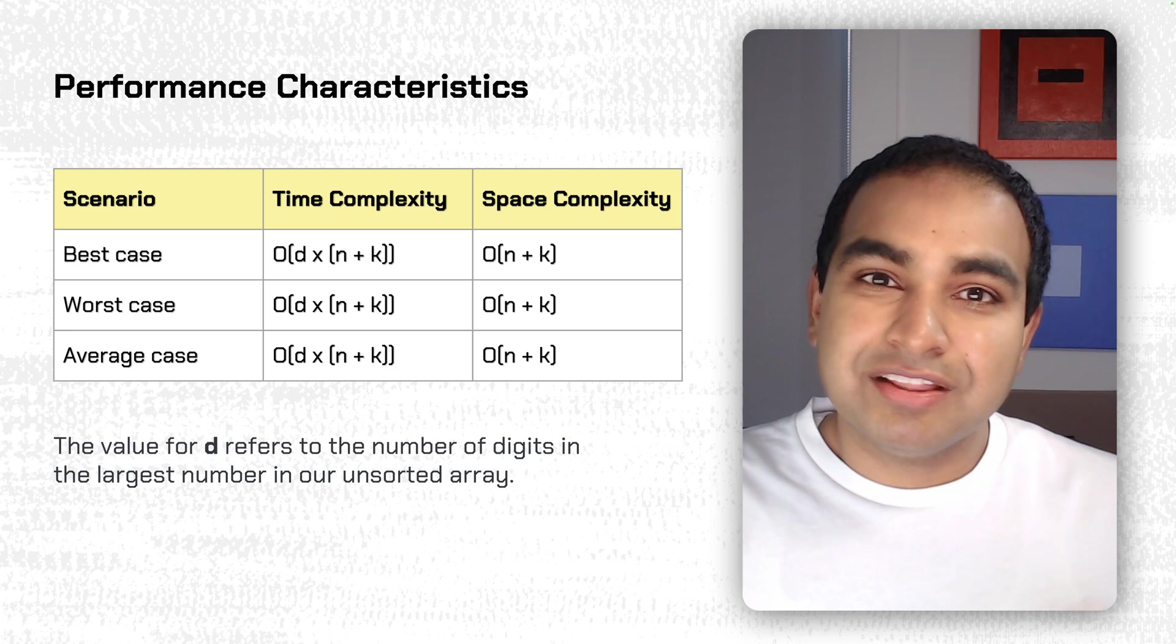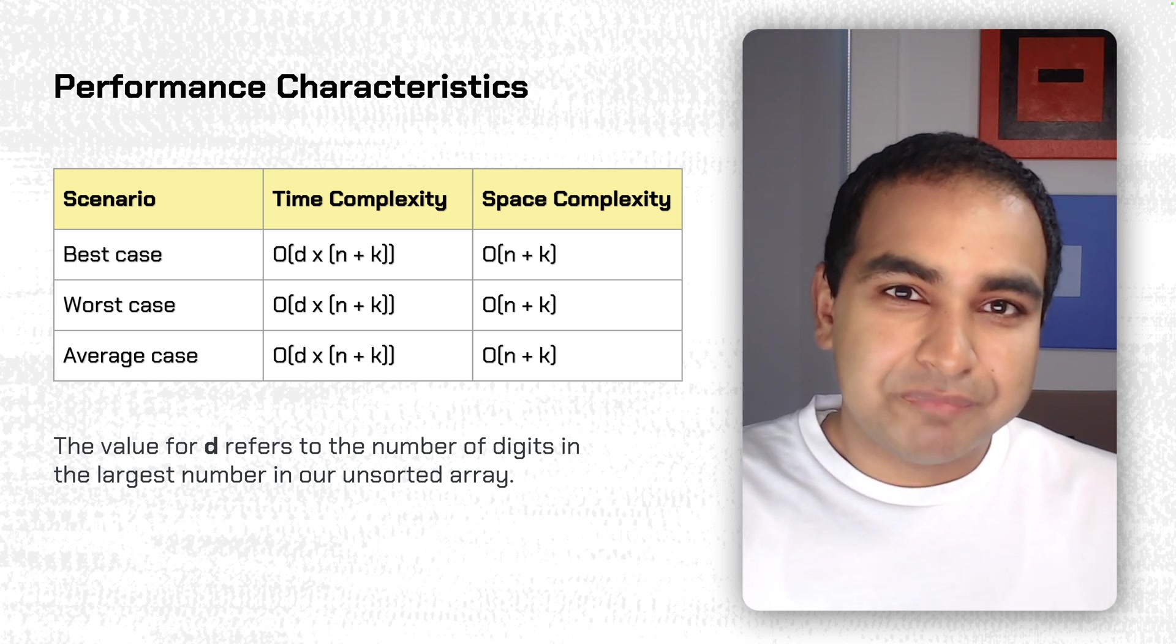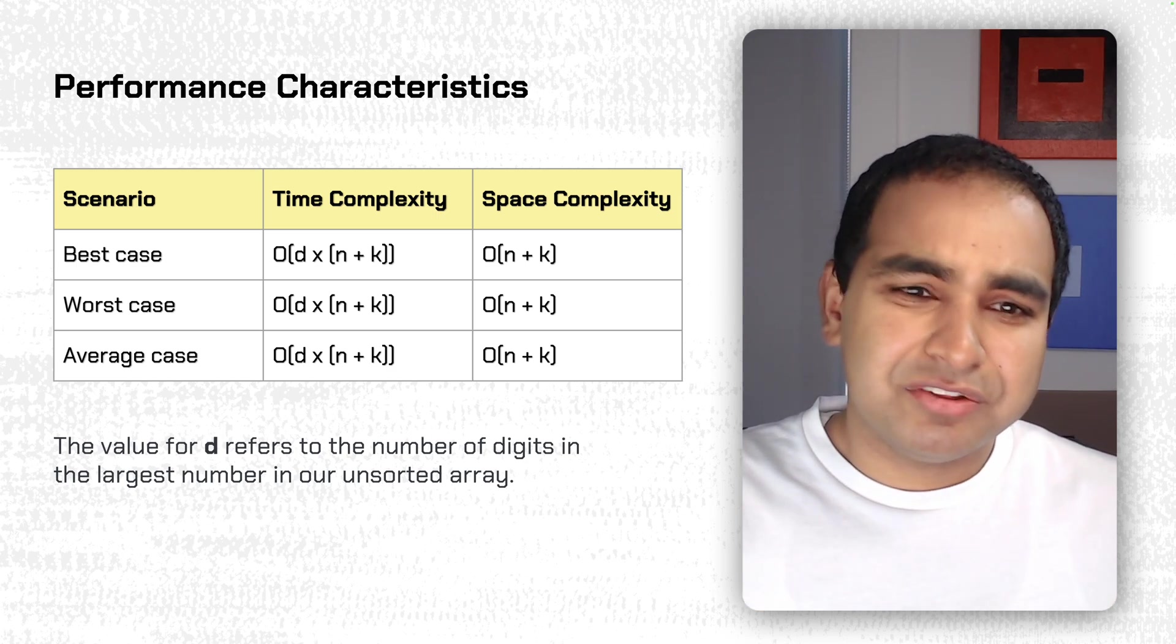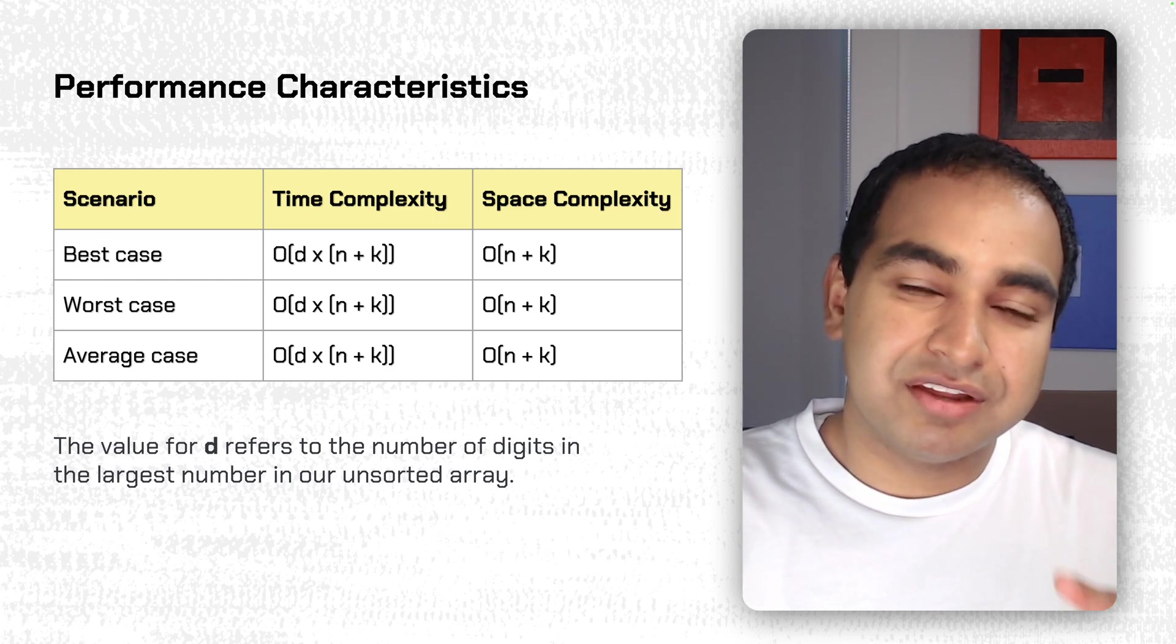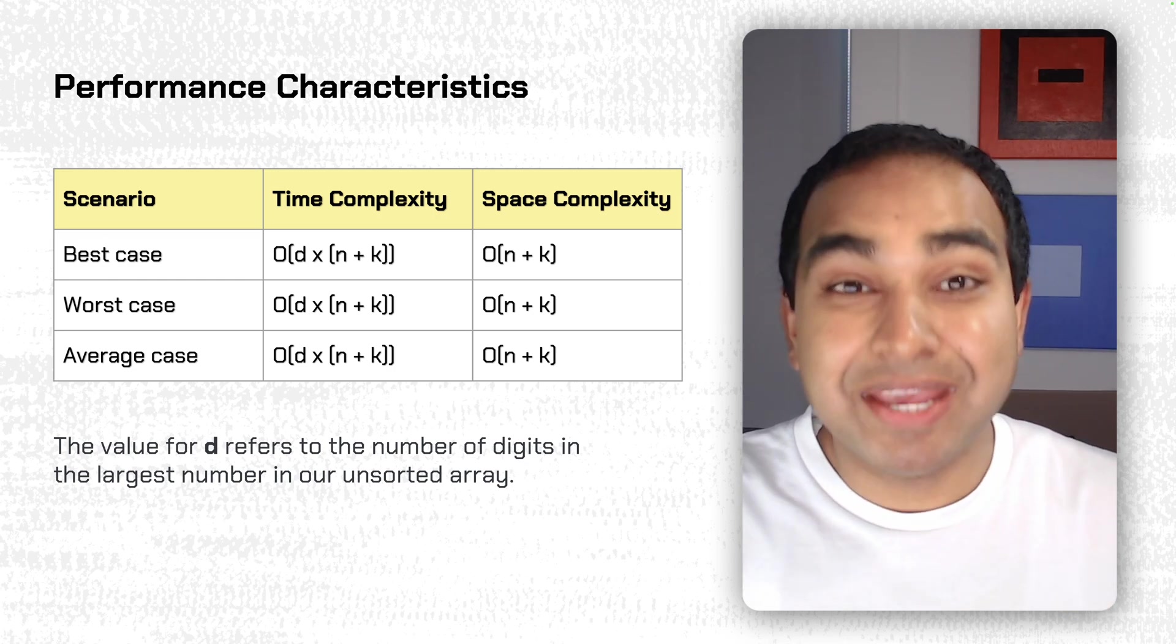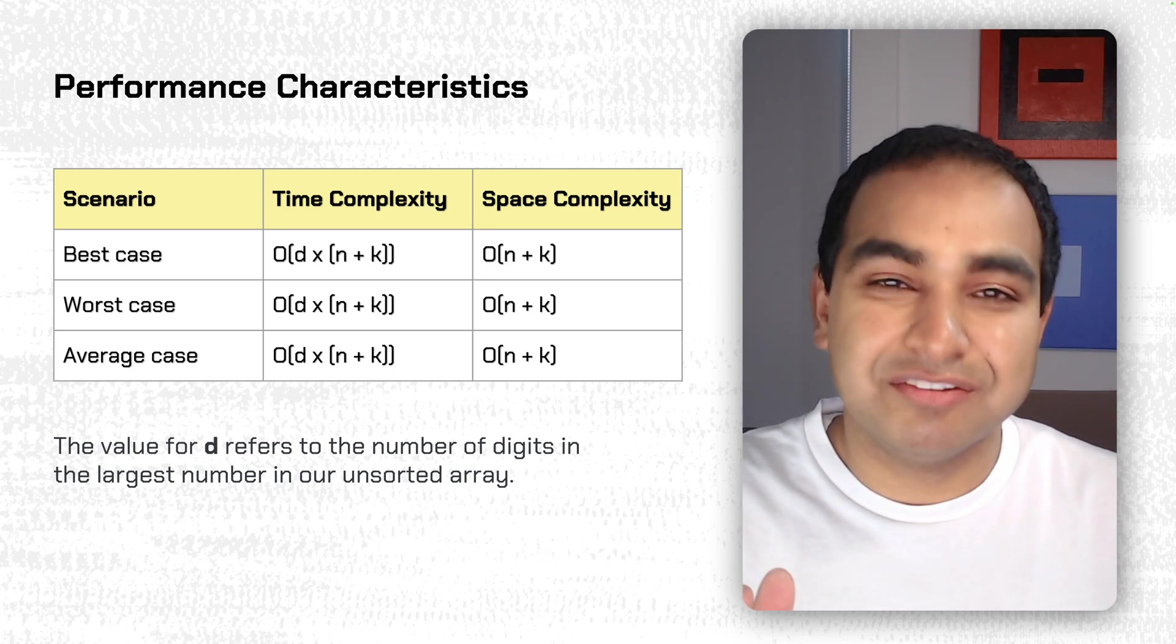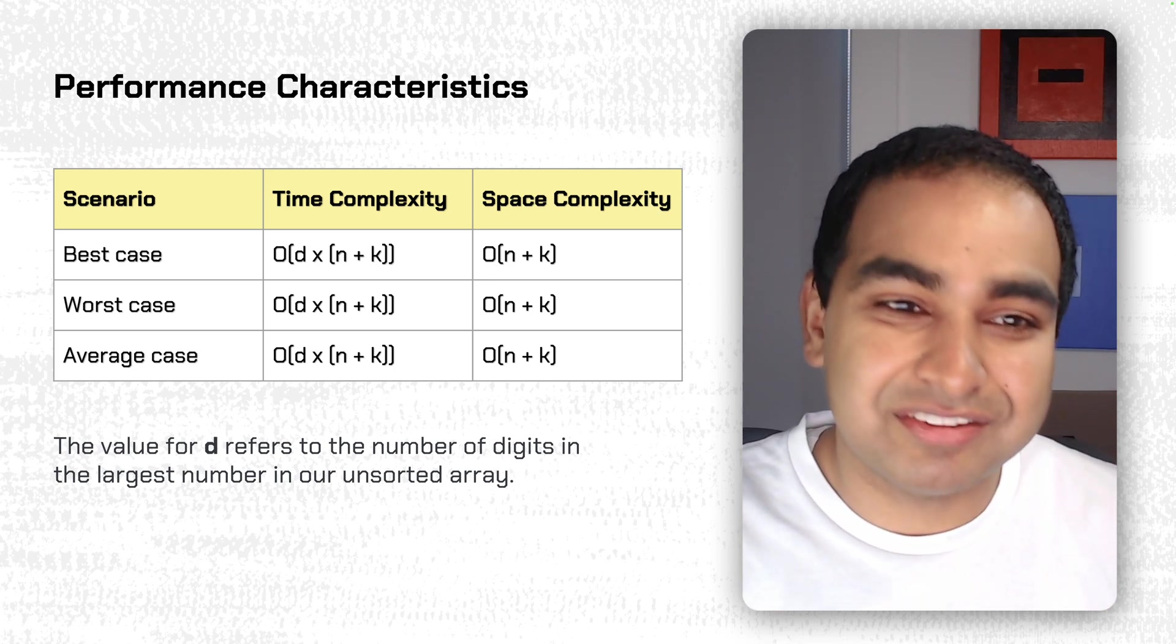And the space complexity, again, is linear because we're just dealing with the sum of the size of the intermediate values, which are not going to be ridiculously large. It's going to be the range of values based on how many numbers you have and the base of the number. So what's the range of numbers you'll be sorting, which in our case will be 0 to 9.